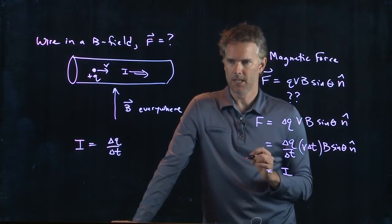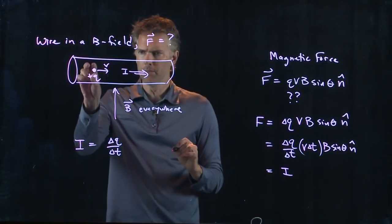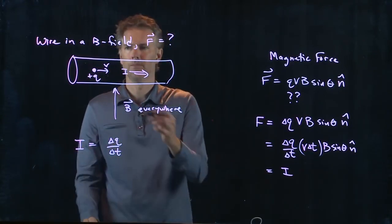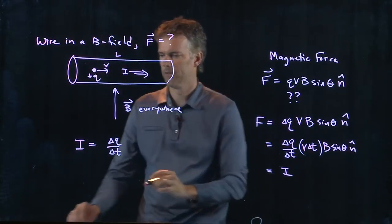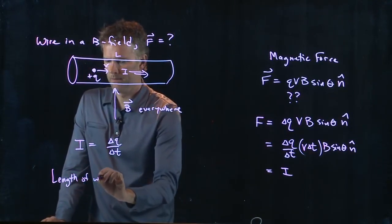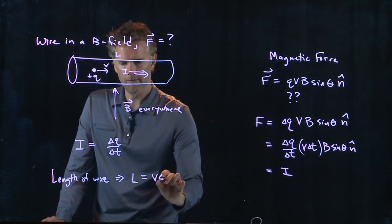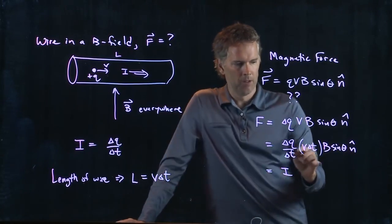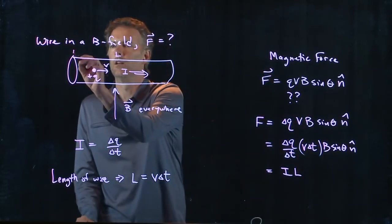What about V delta T? What is V delta T? Well, if the charge is moving along at V and it does that for some amount of time delta T, then that corresponds to some length of wire. The length of the wire is L and that is just V delta T, right? Speed times time gets me distance. So this V delta T just becomes L. It's some length, it's some length of this wire.